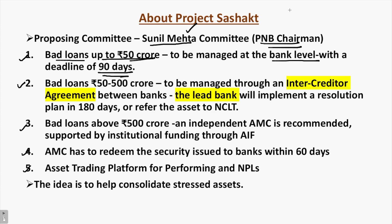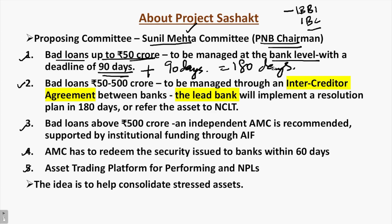One interesting criticism related to Project Sashakt is that it is not in sync with the Insolvency and Bankruptcy Board of India (IBBI) or the Insolvency and Bankruptcy Code (IBC), because IBC says 90 days and Project Sashakt is also saying 90 days. So a total of 180 days now passes before a non-performing loan is sent for resolution — which is not in line with the primary aim of the Insolvency and Bankruptcy Code. The primary idea was to resolve these non-performing loans as fast as possible.